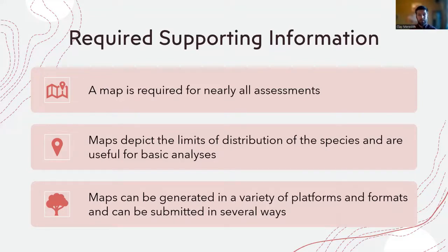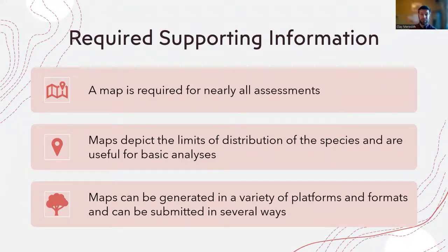Maps are a required component because they provide a means for basic analysis. Researchers can download a compendium of maps from the IUCN to understand where threatened species occur. It's really important when creating maps to understand the purpose of the map. Maps can be generated in a variety of platforms and submitted to the Red List Unit in several ways. If you need more information on how to submit them, please consult the Red List assessor trainer documents, or contact the Red List Unit.